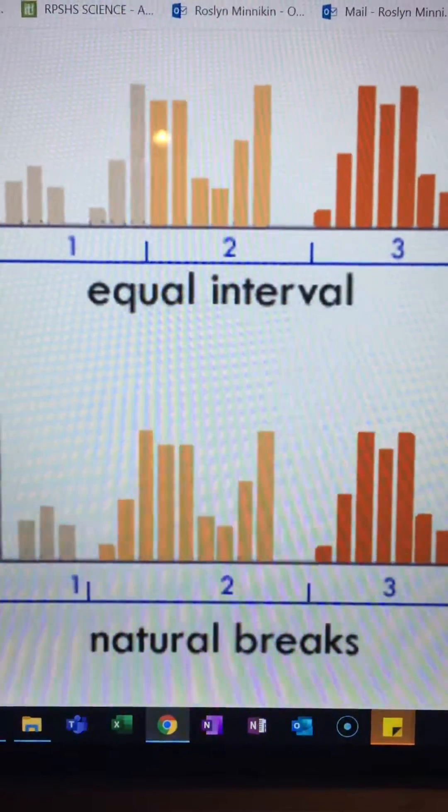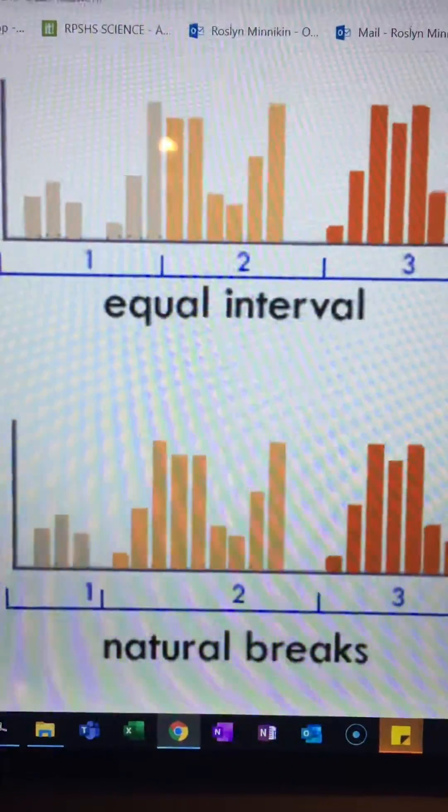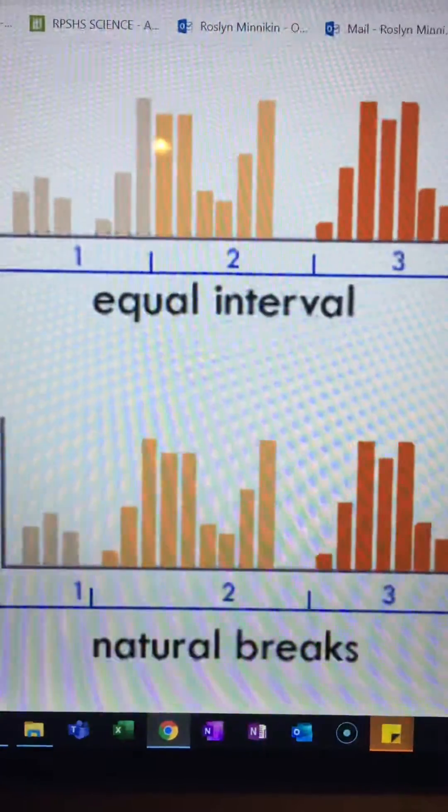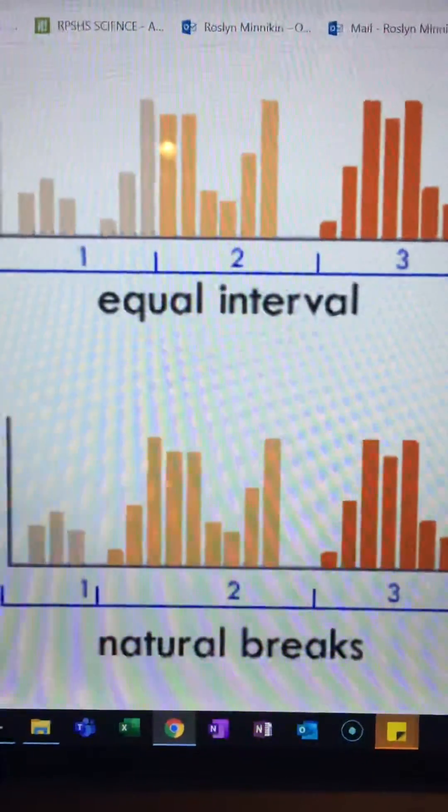As an addendum to what I was just talking about, here's an example of some data where they've used both equal interval and natural breaks to demonstrate how you might be able to create your categories.